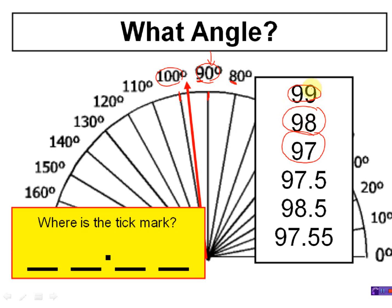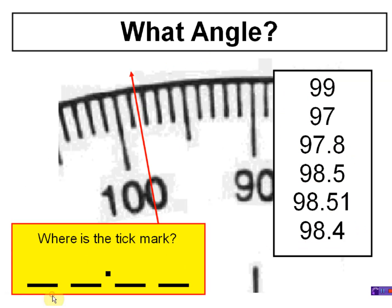If you said 97.5, that is not correct. The 7 is already a guess — an estimate — so if the 7 is uncertain, how can the 5 after it be real? You can't have two estimates; you're only allowed one. Same with 98.5: you're not even sure it's 98, so you definitely can't say 98.5. You're estimating the 7 or 8 — we can't add any more guesses beyond that.